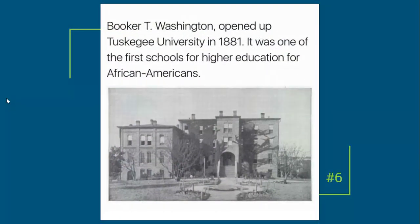Does it begin with Booker T. Washington, who founded a school of higher education specifically for Black students to teach them skills they would need to be successful? He is known as an accommodationist. He opened Tuskegee Institute, now known as Tuskegee University, to teach African Americans how to be the best carpenters, the best bricklayers, and the best field workers they could be. Does it begin with him opening the first school of higher education for African Americans?